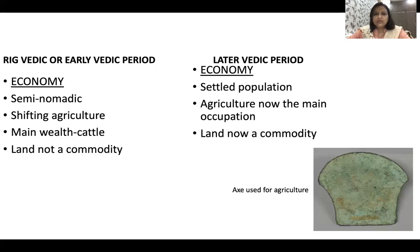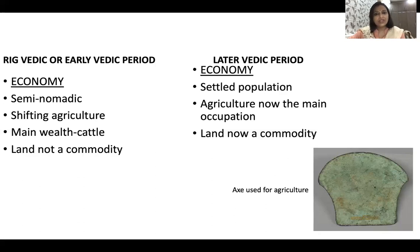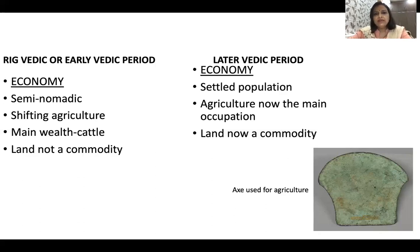In the later Vedic period, the economy has changed. This is also the period known as the second urbanization, because after the decline of the Harappan civilization, people started settling down. Agriculture is now the main occupation, land becomes a commodity, and people living in settled places establish boundaries which are then protected.